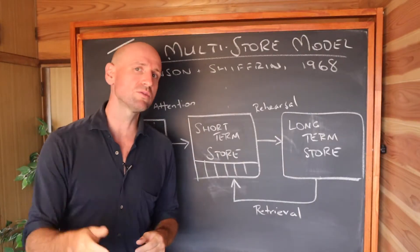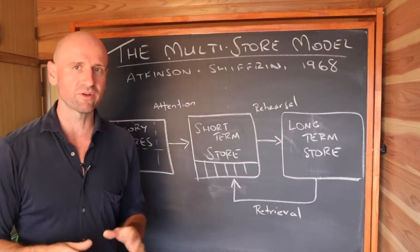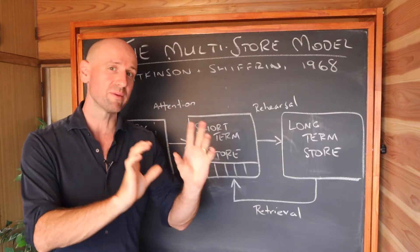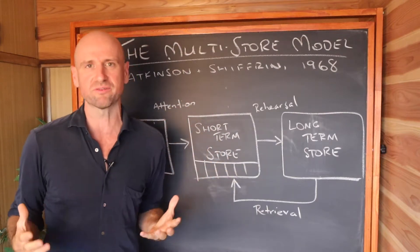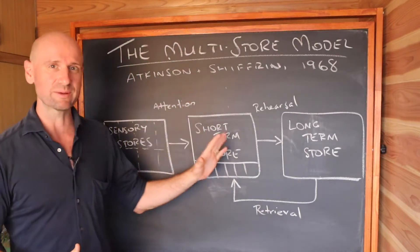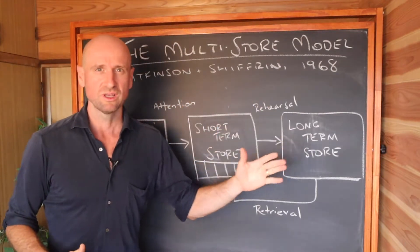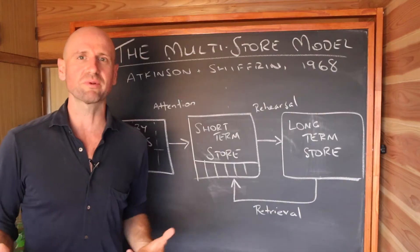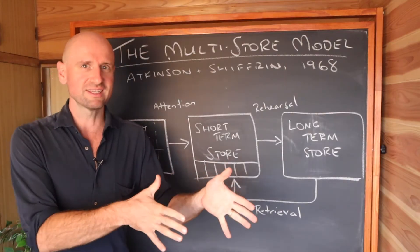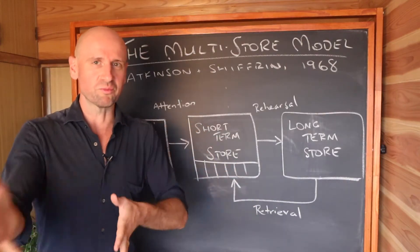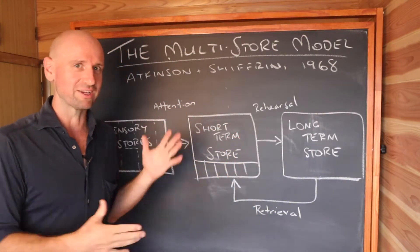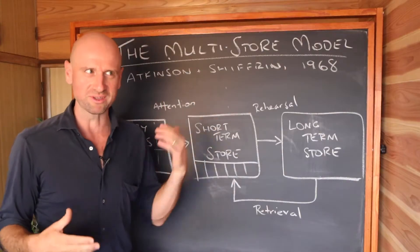As the name suggests, the multi-store model of memory explains the formation of memories — how memories are formed based on three separate stores. I'm going to try to explain the multi-store model using the multi-store model — your memory of my explanation of this model.